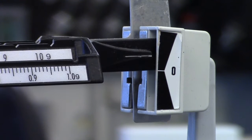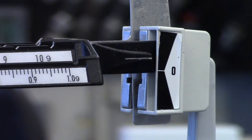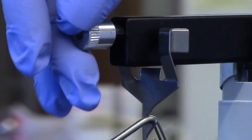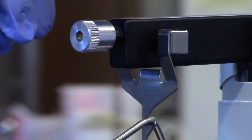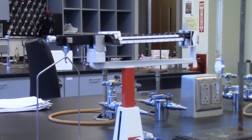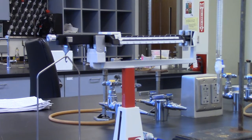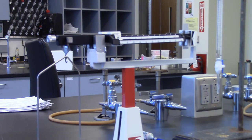If the pointer is above the zero, it means there is not enough mass on the beam, so turn the calibrating screw towards you. Adjust screws so the pointer is pointing to the zero, or swinging equally above and below the zero.